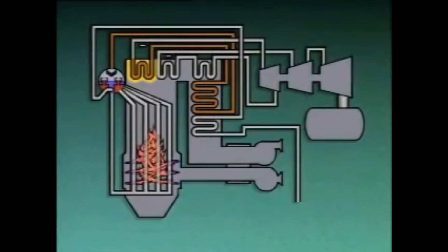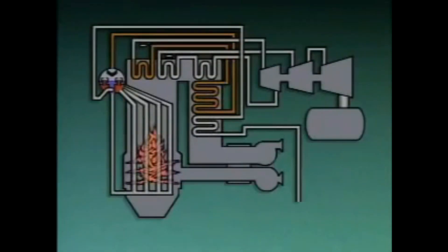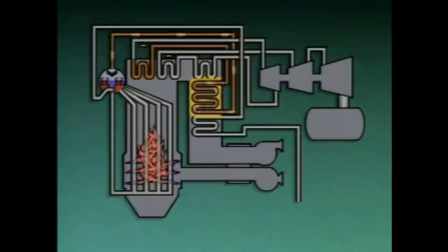A radiant superheater is in a direct line of sight with the flames in the boiler furnace, and it receives most of its heat by radiation from the flames. A superheater may also be classified as a primary superheater or secondary superheater. A primary superheater is the superheater that the steam passes through first. It is usually a convection superheater, and it is generally in a cooler location than the secondary superheater.